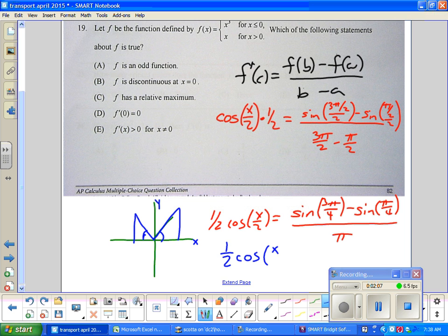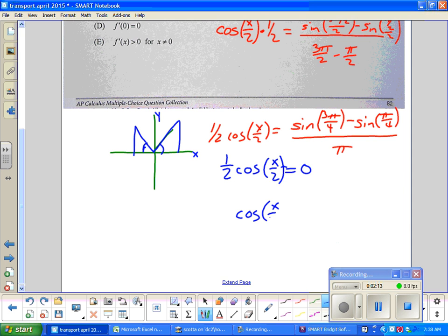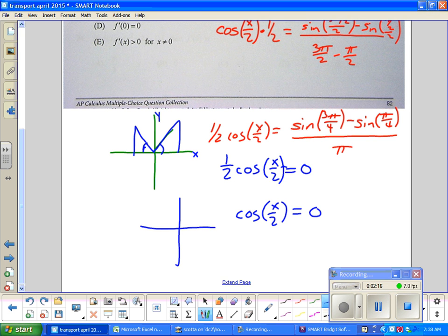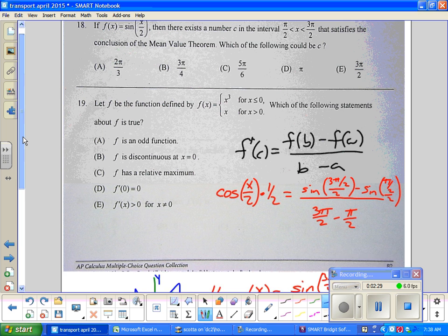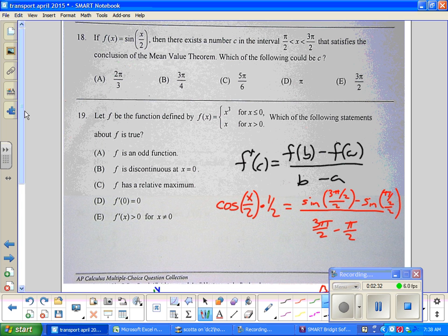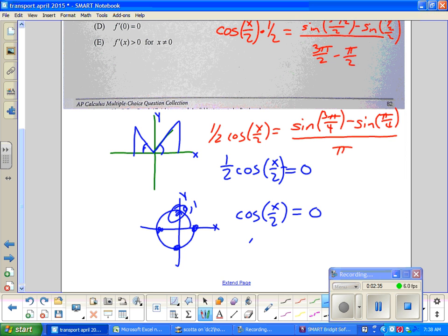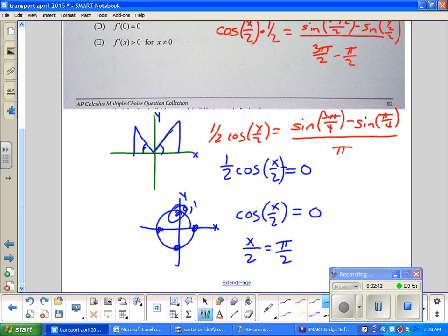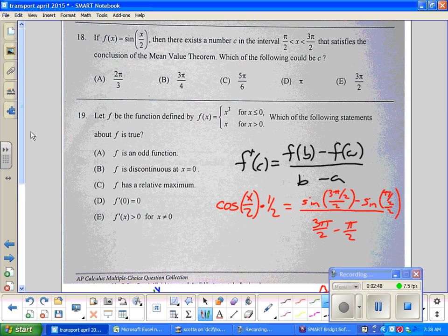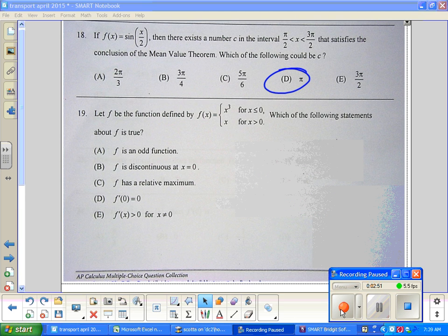So 1/2 cos(x/2) equals 0, which gives cosine(x/2) equals 0. Unit circle time - when is cosine 0 in that interval? And I always think of unit circle here. Obviously 0 is right there for the x value, so π/2 it is 0. So I go all the way back to the top, and that π/2 though is equal to x/2. So I multiply both sides by 2 and I get x equals π. So the mean value theorem is going to have a value at letter D, π.